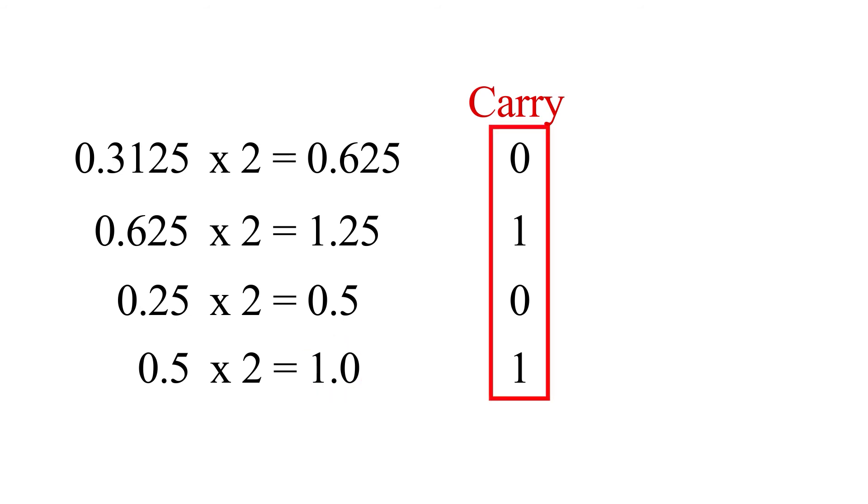This time the most significant bit is the top digit in the carry column and the least significant bit is the bottom digit. So 0.3125 in binary is 0.0101.